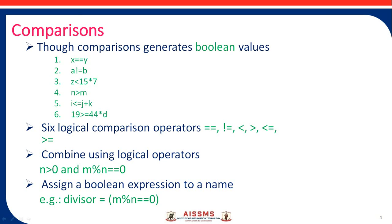We can combine different logical operators together using a logical operator. For example, n greater than zero is a comparison operation, and n mod n equals zero is also a comparison operation. We can combine these two comparison operations using a logical operator. We can also assign boolean values to a particular name — for example, divisor is a name, and on the right-hand side the expression m mod n equals zero is a comparison that yields true or false, which is then assigned to divisor.